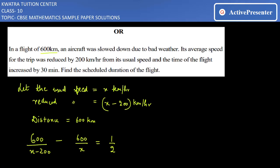600 over x is equal to half. We have half here because it says 30 minutes. If we convert 30 minutes to hours, 30 divided by 60 gives us half hour.